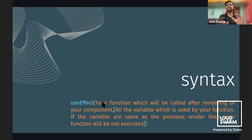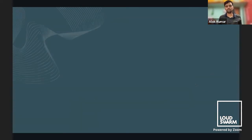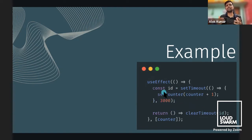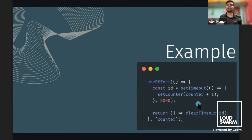The useEffect syntax has a function and a dependency array. Whatever variables are used in your function must be listed in this dependency array. If the variables are the same as the previous render, the function will not execute. If your variable or function changes, the effect function runs again. useEffect also gives you an option to return a cleanup function — for removing event listeners, subscriptions, or timeouts — which gets executed when the component is unmounted.